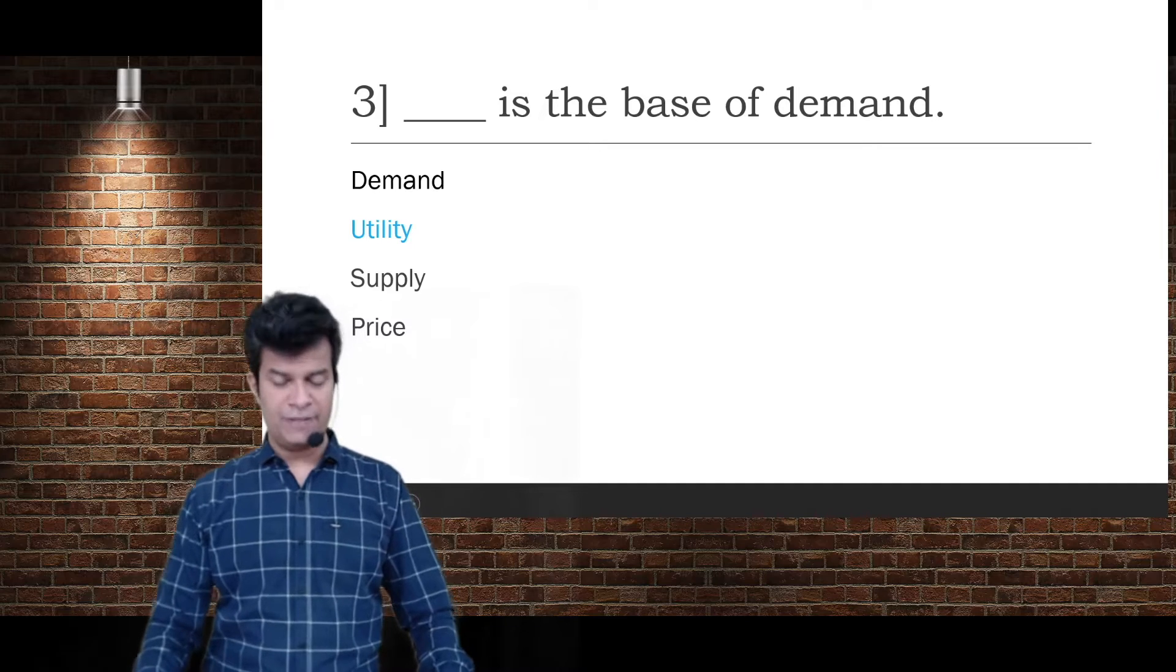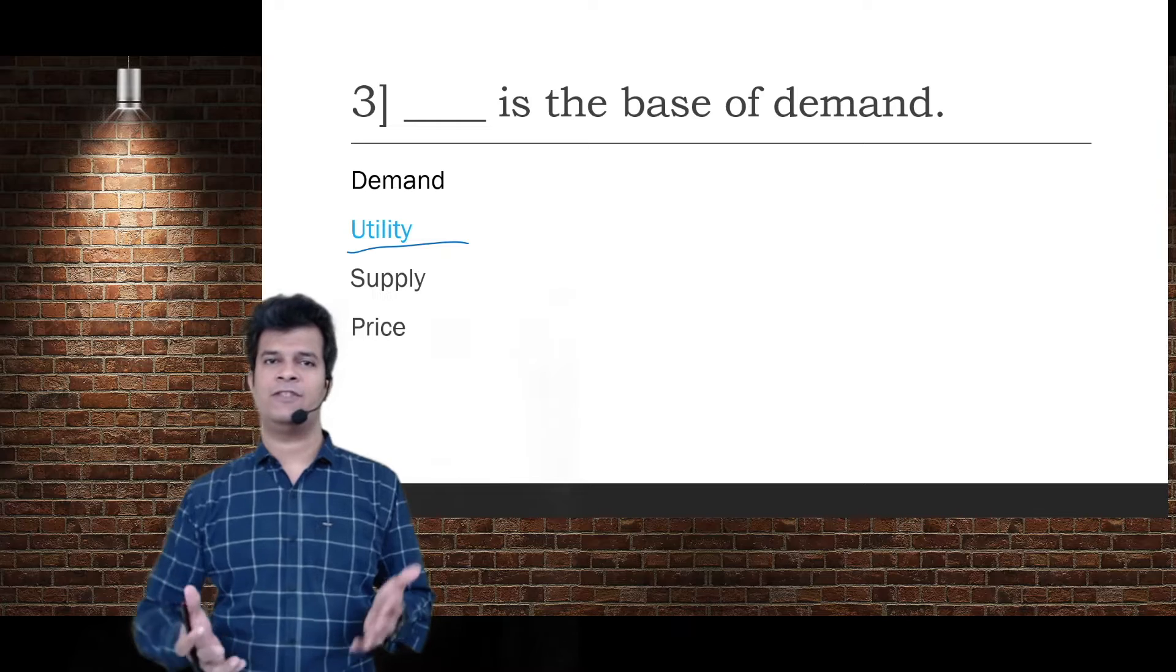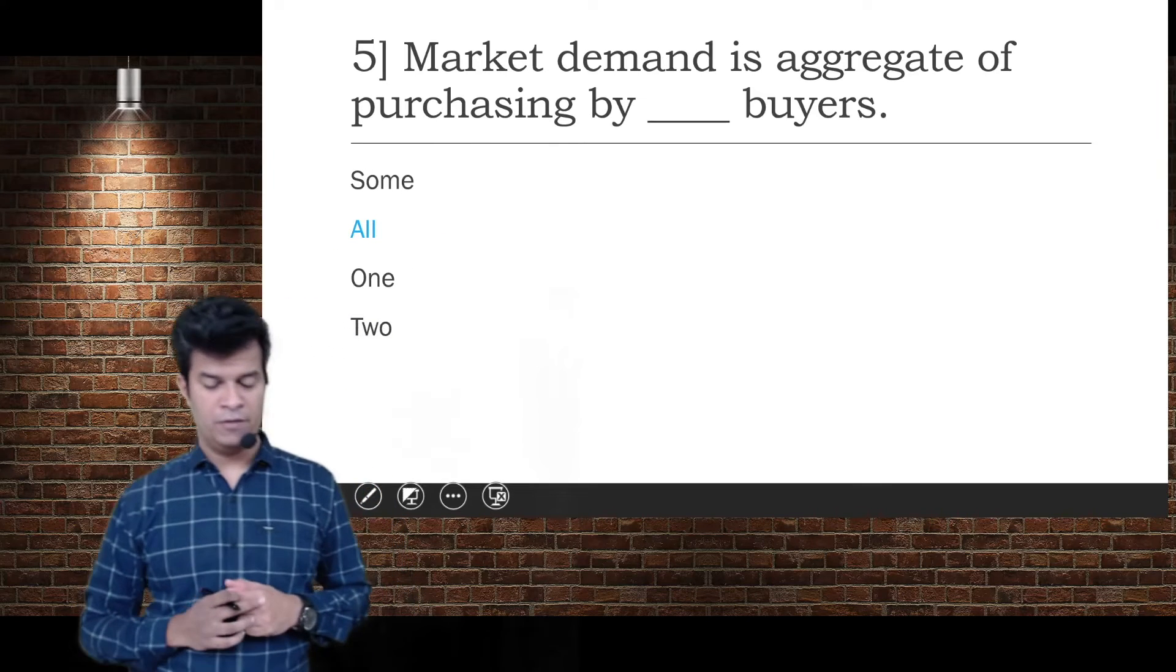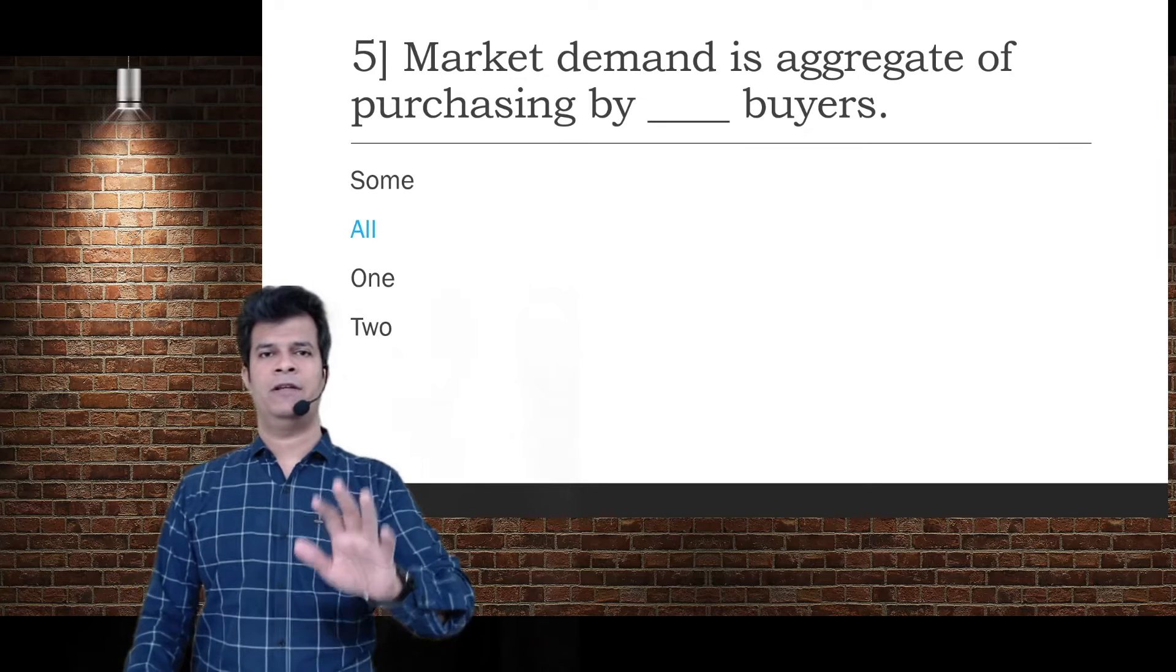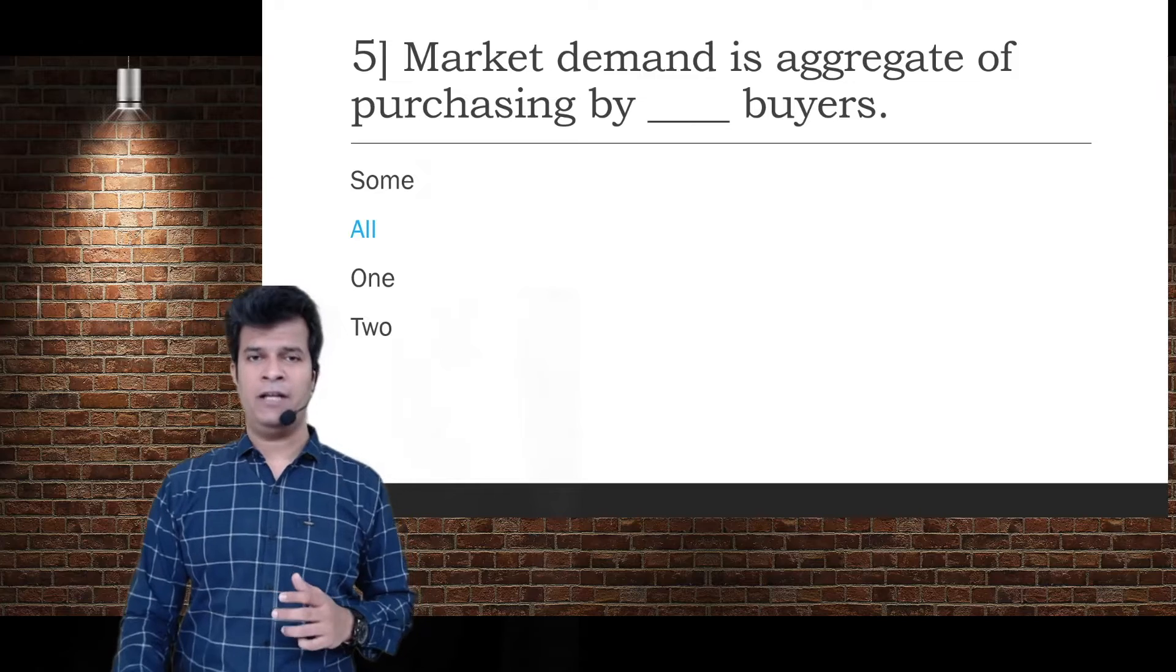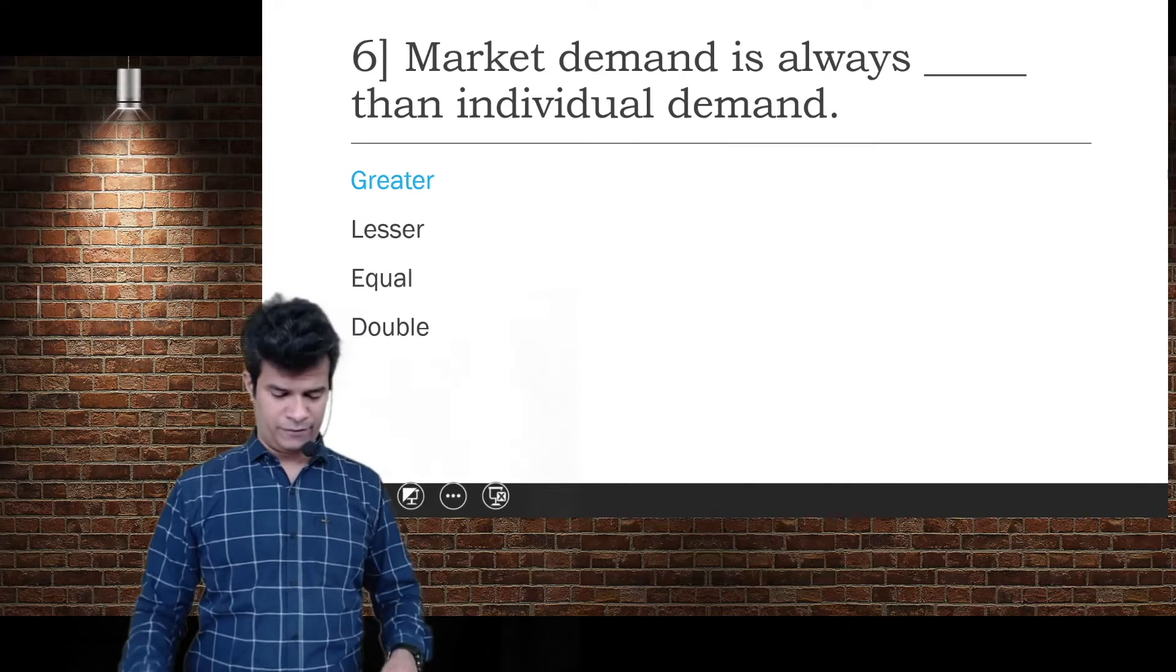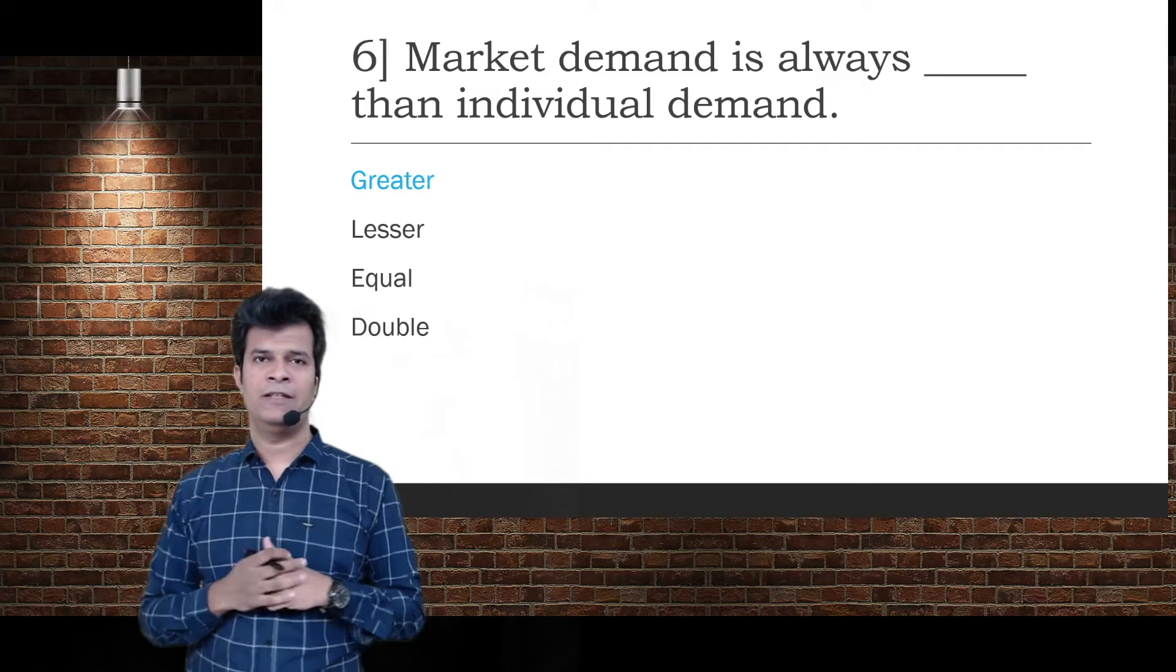Demand is a relative concept. Market demand is aggregate of purchasing by all buyers. Market demand is always greater than individual demand. Obviously, individual demand is how much one person demands, but if you add the entire market, market demand is always greater.